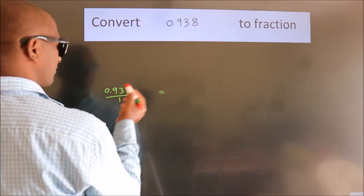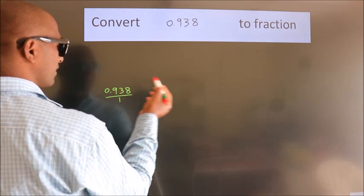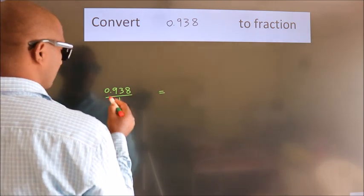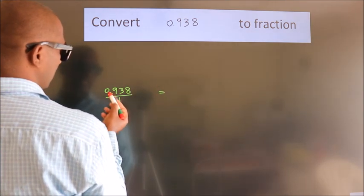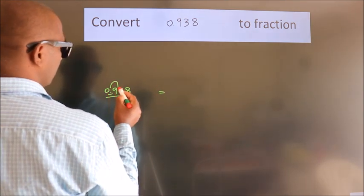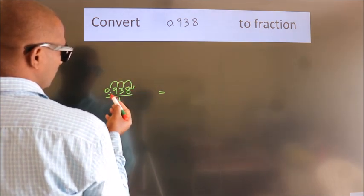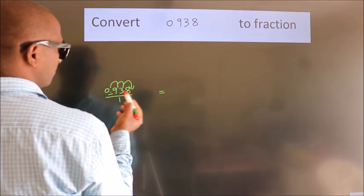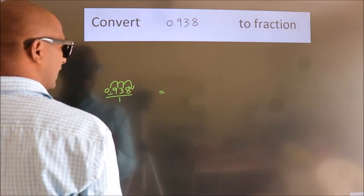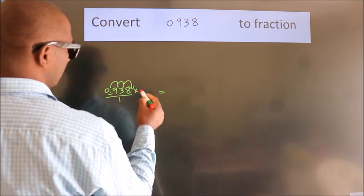To convert this to fraction, we have to move this decimal after 1, 2, 3 numbers. To move this decimal after 3 numbers, we have to multiply it with 1000.